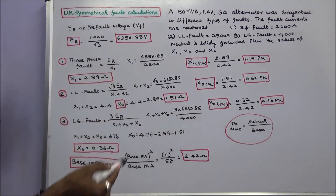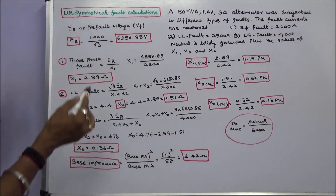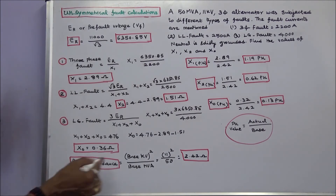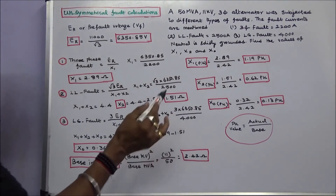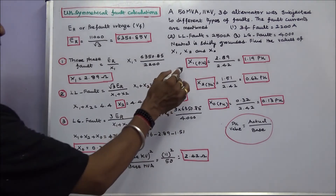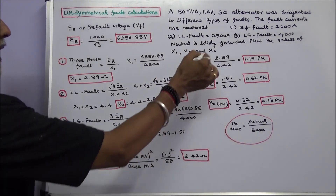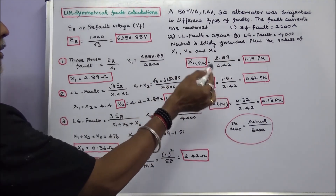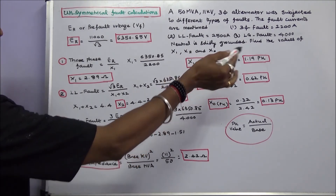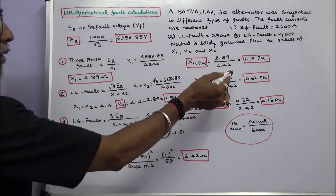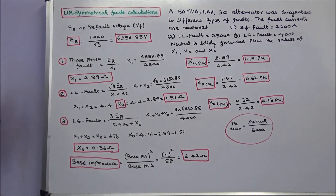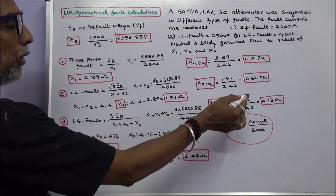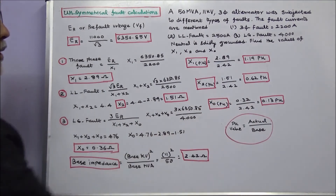To convert all values to per unit, we find the base impedance. Base impedance equals base kV squared divided by base MVA, which is 11 squared divided by 50, equal to 2.42 ohms. So X1 per unit is 2.89 divided by 2.42, equal to 1.19 per unit. X2 per unit is 1.51 divided by 2.42, equal to 0.62 per unit. X0 per unit is 0.36 divided by 2.42, equal to 0.13 per unit.